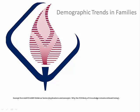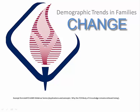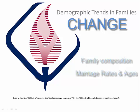Using U.S. Census data, we are going to be taking a look at the demographic trends in families over the past 20 years. Regarding these demographic trends, if anything can be identified as a constant, it is change. The data reveal tremendous changes in family composition, marriage rates and ages, and what constitutes a household in the United States. These data were presented in the AAFCS AIM series webinar titled Applications of the Body of Knowledge, and this presentation concludes with references for the webinar and data cited.